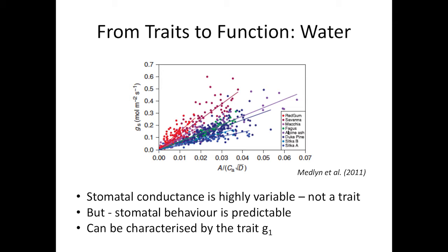Thinking about water: the main thing characterising plant water use is stomatal conductance, but stomatal conductance is clearly not a trait — it's highly variable. Our 2011 paper looked at stomatal conductance and how it correlates with photosynthesis, CO2, and VPD. It varies over the course of the day with all kinds of environmental conditions, but it is predictable. The slope of that relationship varies consistently across species, and that slope is our G1 — the species trait we really need.